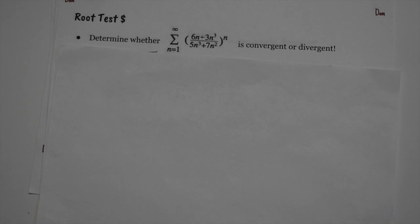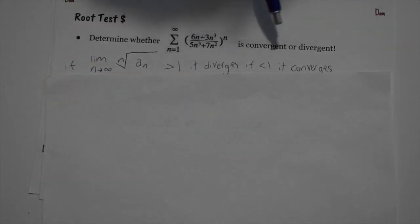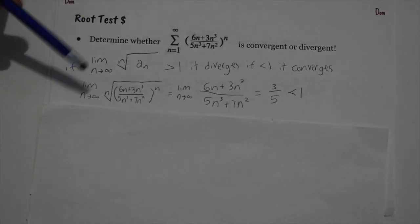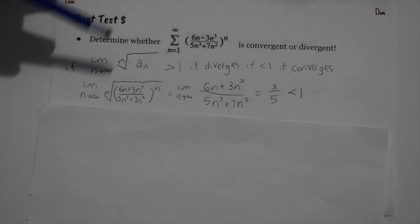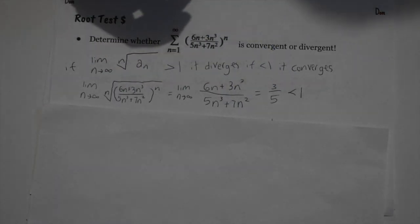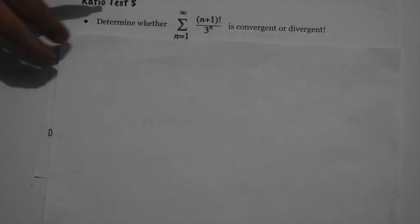For the root test, we take the limit as n goes to infinity of the nth root of |a_n|. If the result is greater than 1 it diverges, less than 1 it converges, and equal to 1 is non-conclusive. We take the nth root, the n's cancel out, and as n approaches infinity we get 3/5, which is less than 1. Therefore it converges by the root test.